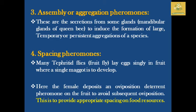The male of Danaus (danaiscupids) produces danaidae pheromone for sex attraction. Assembly or aggregation pheromones are secreted from mandibular glands of the queen bee to induce the formation of temporary and permanent aggregations of the species. Spacing pheromones are produced by the tephritid fruit fly, which lays eggs in fruit where a single maggot develops, and the female deposits spacing pheromones on the fruit to avoid subsequent oviposition.